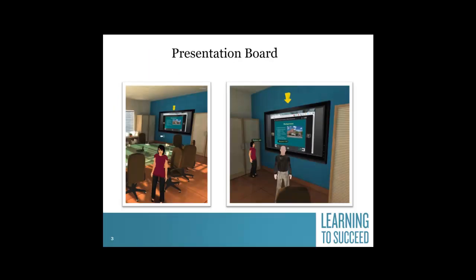If you are watching this, then I think I can assume that you've found the presentation board within our Situation Room. You will notice the yellow arrows around the room. Those indicate resources that you have the ability to interact with. Exploration is necessary to make the most of this activity.